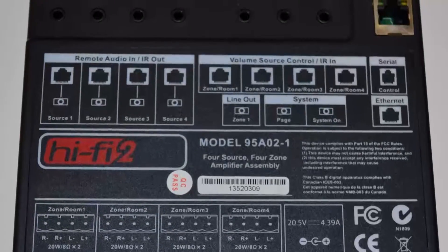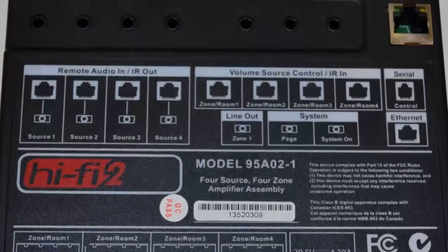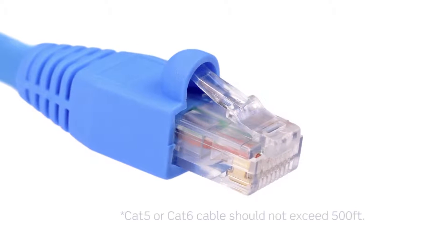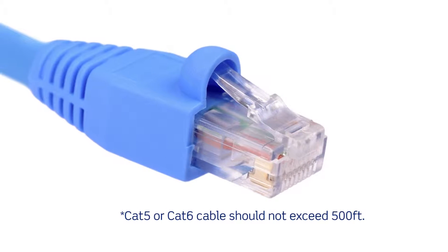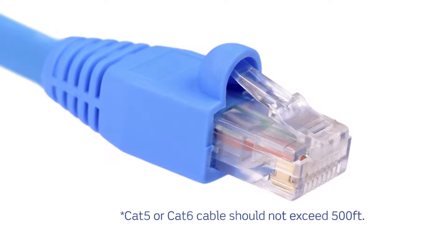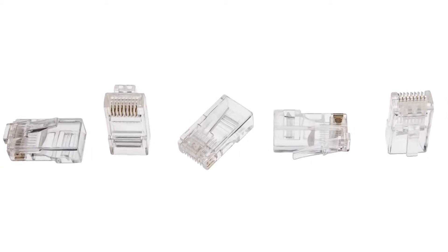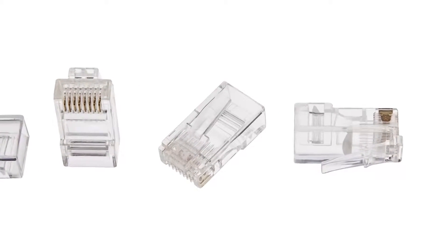These modules connect directly to the Hi-Fi 2 4x4 main amplifier assembly using Cat5 unshielded twisted pair for communication. Each end of the wire should be terminated with an RJ45 connector. Properly terminating the Cat5 cable is crucial for proper operation of the system.